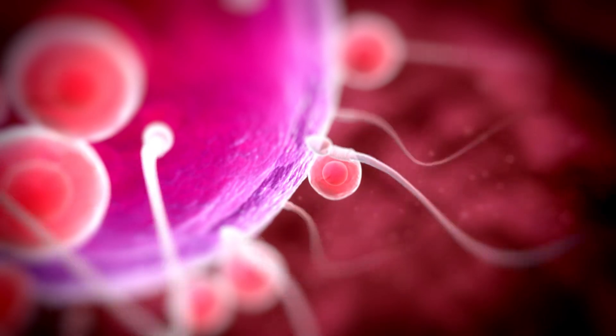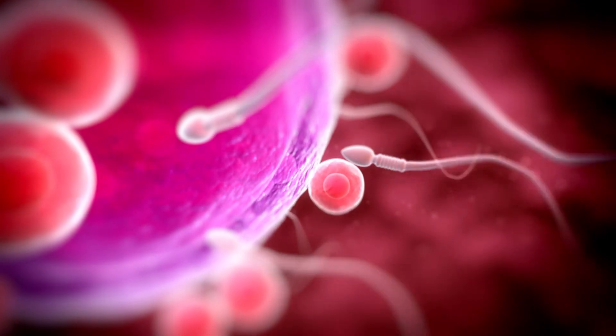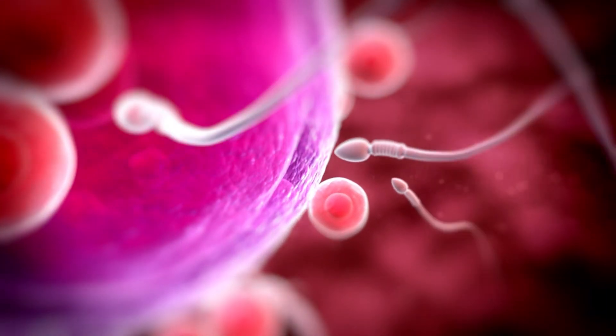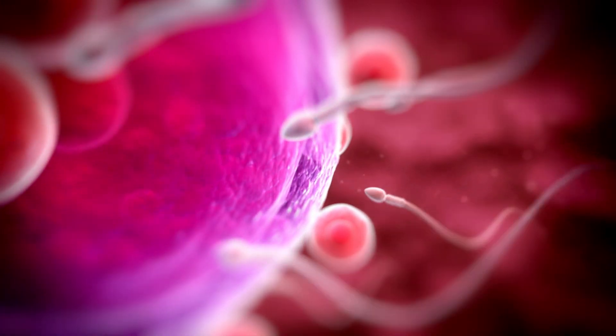Within minutes, the outer membranes of the sperm and egg merge, and the egg attracts the sperm inside. This event triggers changes in the membrane, preventing other sperm from attaching and releasing chemicals that repel them, rendering the egg impenetrable.